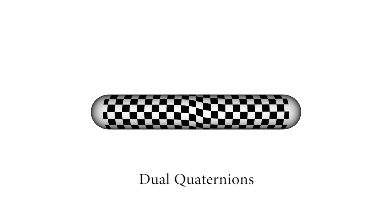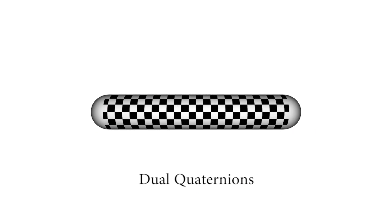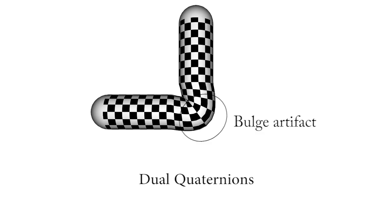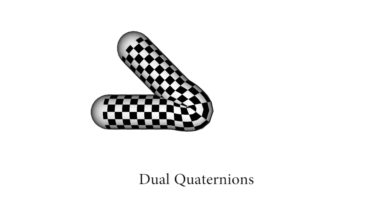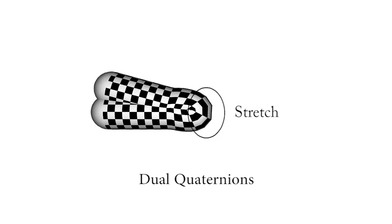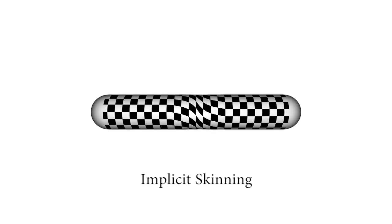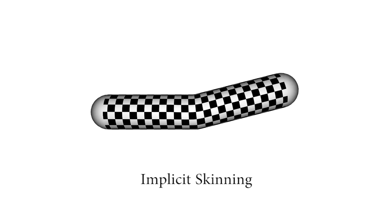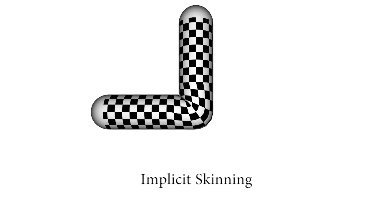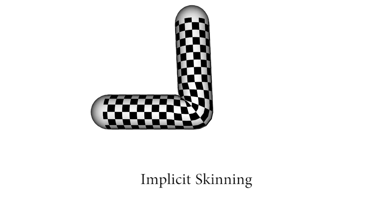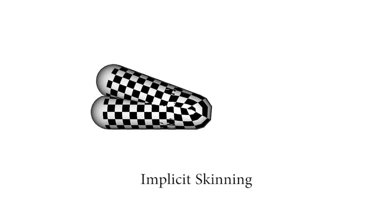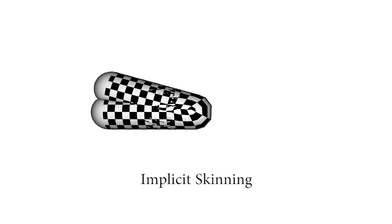Popular approaches like dual quaternion skinning are very fast to compute but introduce unwanted bulges, self-intersections and large parametric distortions. The recent implicit skinning approach fixes the common twisting and bending artefacts while introducing plausible skin contacts in real time. Unfortunately, parametric distortions are still evident in extreme bends.